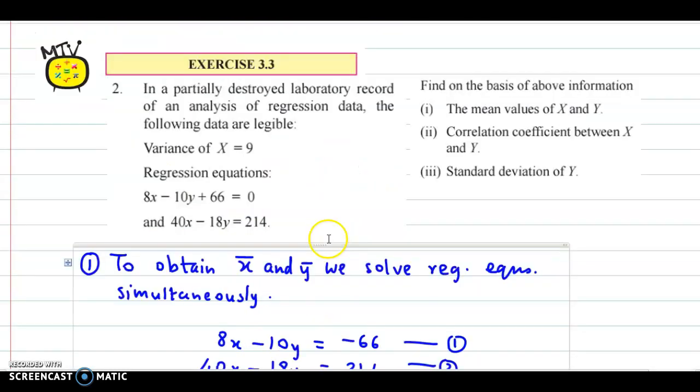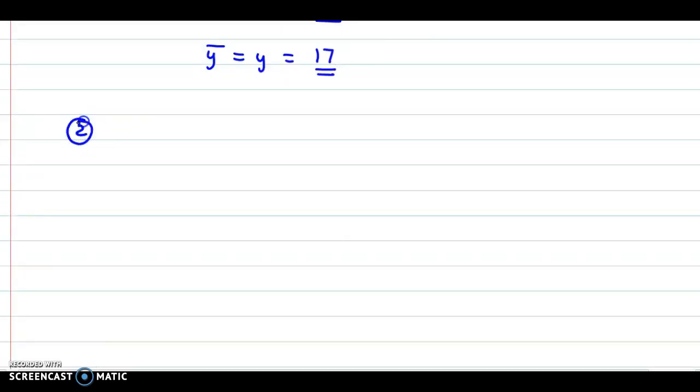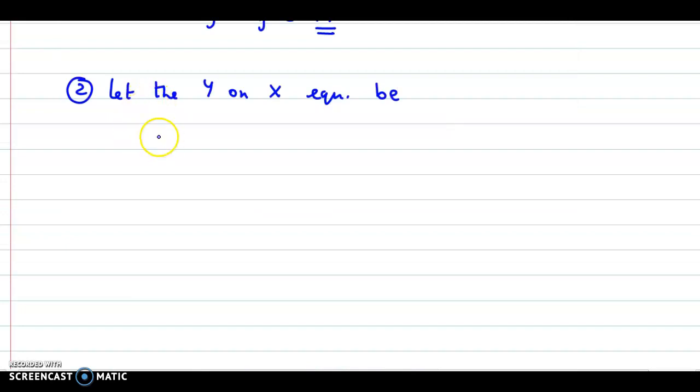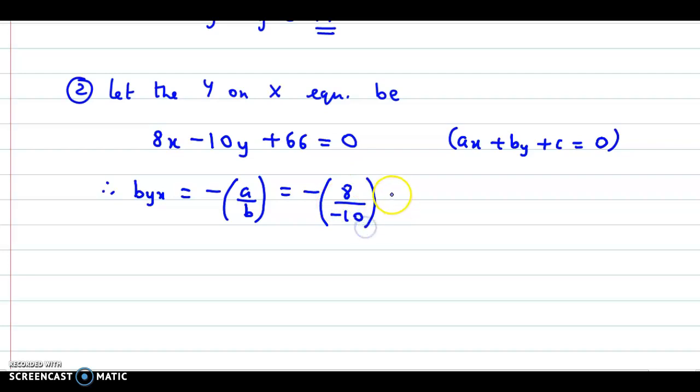Next we need to find correlation coefficient, but type is not specified, so we make assumptions. Let the Y on X equation be first equation, 8x minus 10y plus 66 equals 0. Using the formula ax plus by plus c equals 0, we get byx which is minus A by B, that is minus 8 upon minus 10, which reduces to 4 by 5.